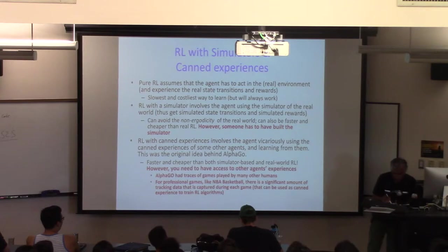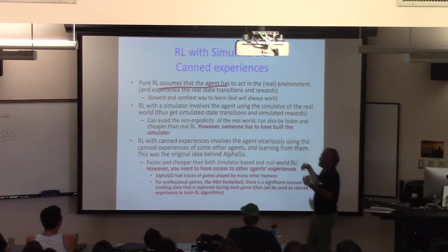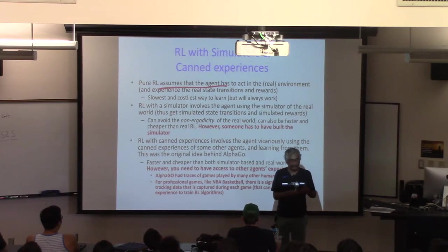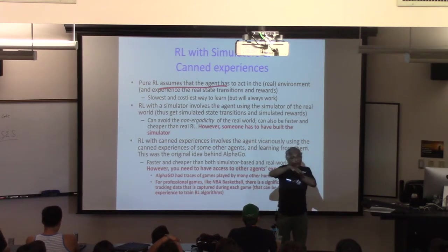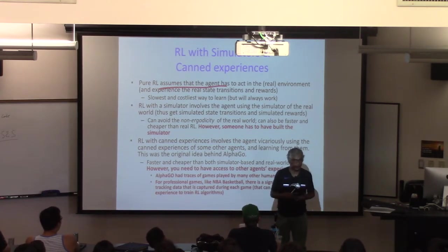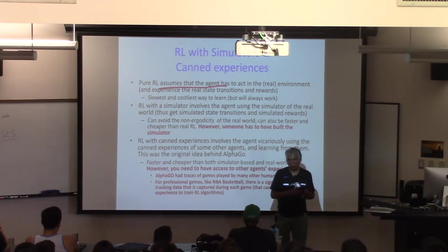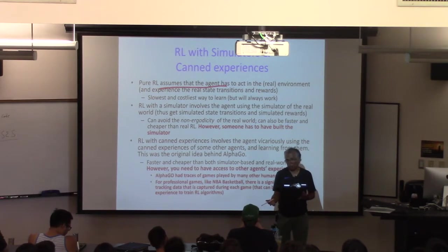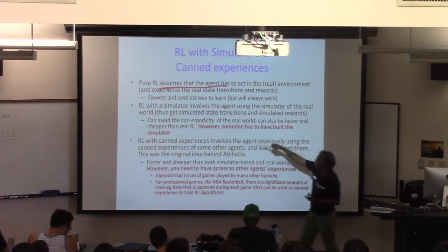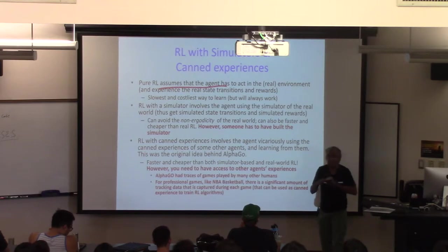Even though pure RL assumes the agent has to act in the real world — that's what's happening in TD learning — acting in the real world will work anytime, even if you are on Mars. It's costly, and you can die, but it also can get you Nobel prizes. You have to decide how to deal with the trade-offs. It's the slowest but most reliable way to learn — this is true, original reinforcement learning.